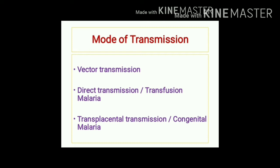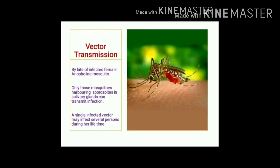Vector transmission occurs due to bites of infected female Anopheles mosquito. Not all female Anopheles mosquitoes can transmit infection — only those which harbor sporozoites in their salivary glands. However, a single infected female Anopheles mosquito has the potential to transmit malaria to several persons.